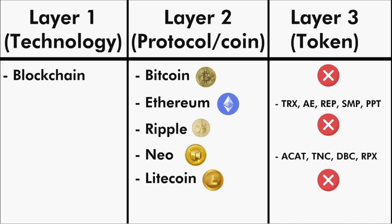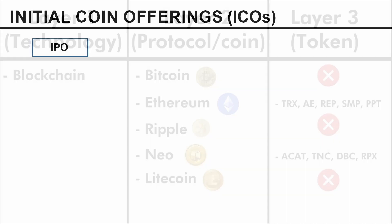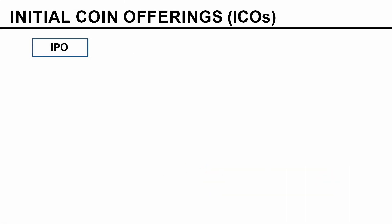Now let's have a look at how ICOs really work. What we are going to do here is compare IPO with ICO. IPO stands for Initial Public Offering, and it's a way that companies have historically used to raise money from the stock market. Let's have a look.